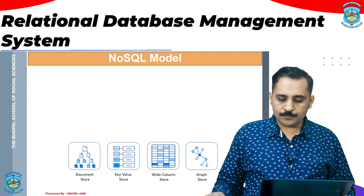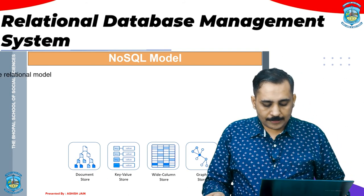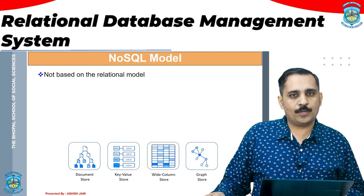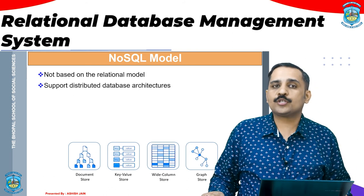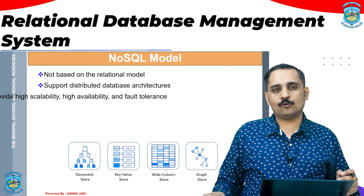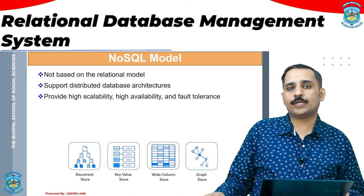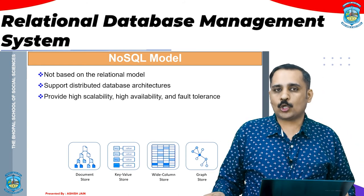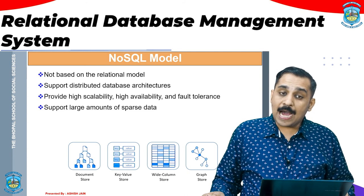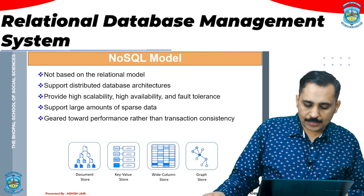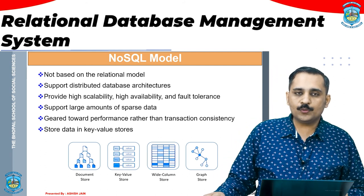So we use the NoSQL model. The NoSQL model comprises document store, a key-value store method, wide column store method, and a graph store method. This NoSQL model is not based on the relational model. It supports a distributed database structure in which all the information is not stored in one place but is distributed or scattered. It provides high scalability, high availability, and fault tolerance — because our data is distributed, if one node fails, data access cannot be stopped; we can have it from other sources. It supports large amounts of sparse data and is geared toward performance rather than transaction consistency.